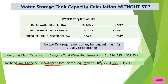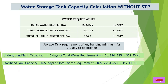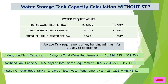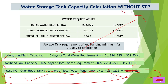If there is no overhead tank — for example, if the building structure cannot accommodate one — then we size the underground tank for 2 days of total water requirement: 2 × 234.225 = 468 KL. This concludes the without-STP calculation.